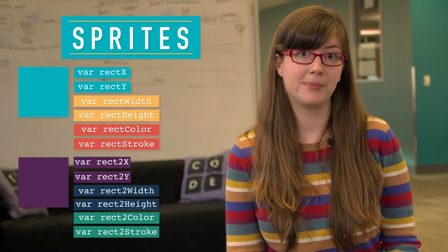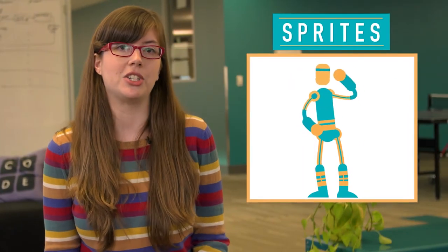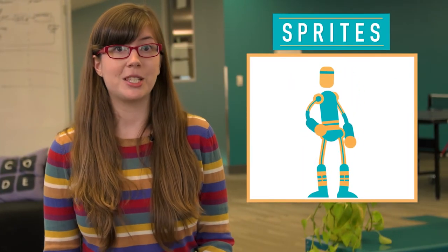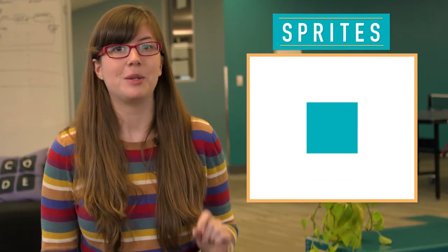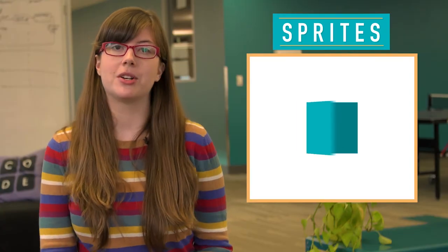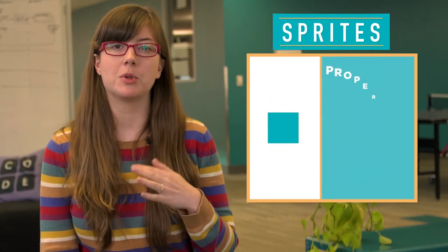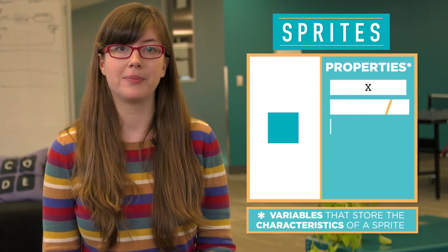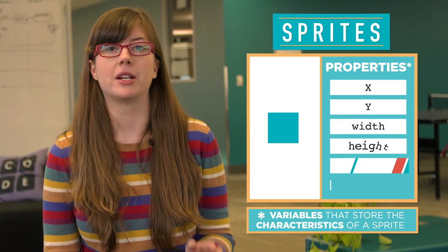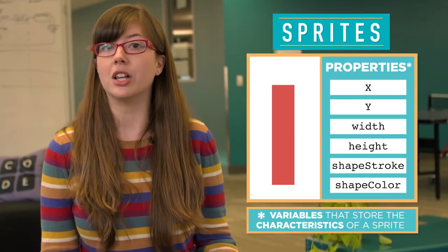The solution is to start animating with sprites. Think of a sprite like a character that lives inside your animations. At first, a sprite will pretty much just be a rectangle. But the beauty of a sprite is what it has going on behind the scenes. When you make a sprite, it comes with properties, which are variables that store the characteristics of a sprite. Properties describe things like where the sprite's located on the screen, what it looks like, and what color it is.